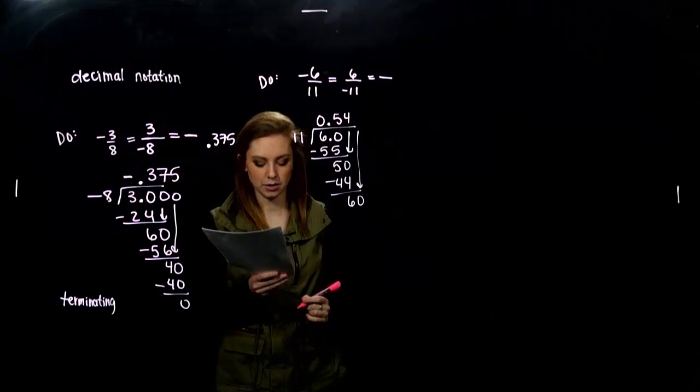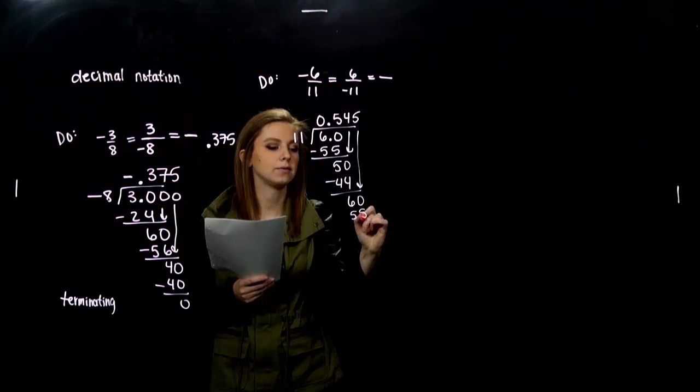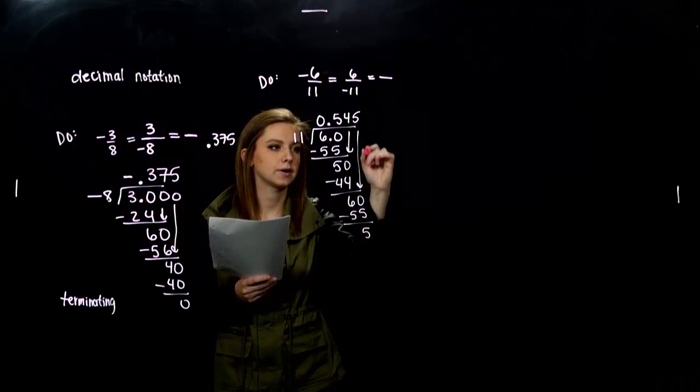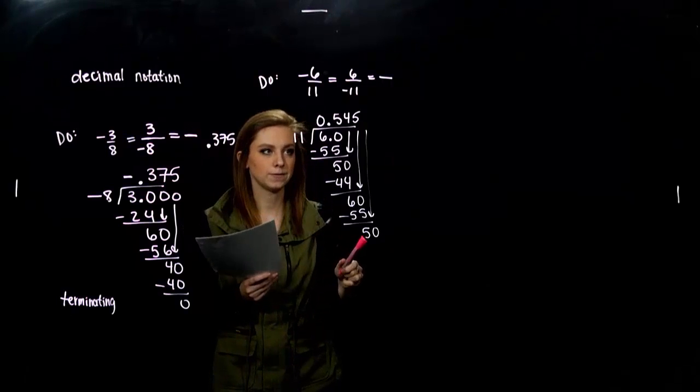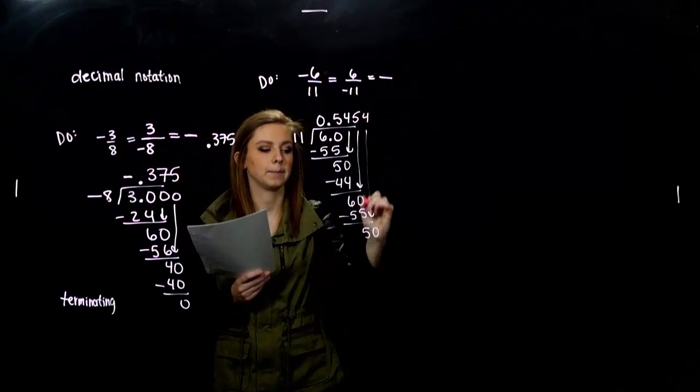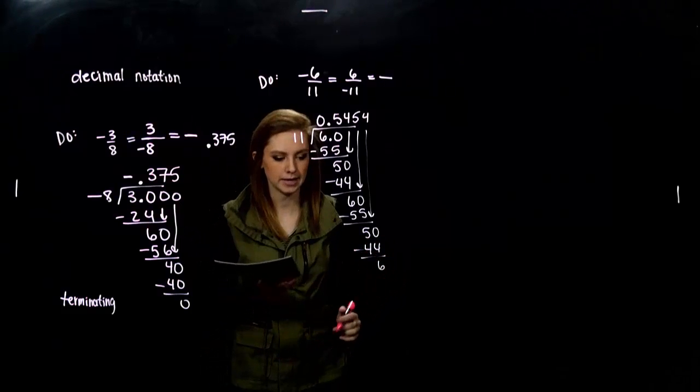How many times can eleven go into sixty without going over? Five. Got fifty-five. Difference is five. Bringing down a zero. Eleven into fifty how many times without going over? Four. So, we have a repeating decimal.